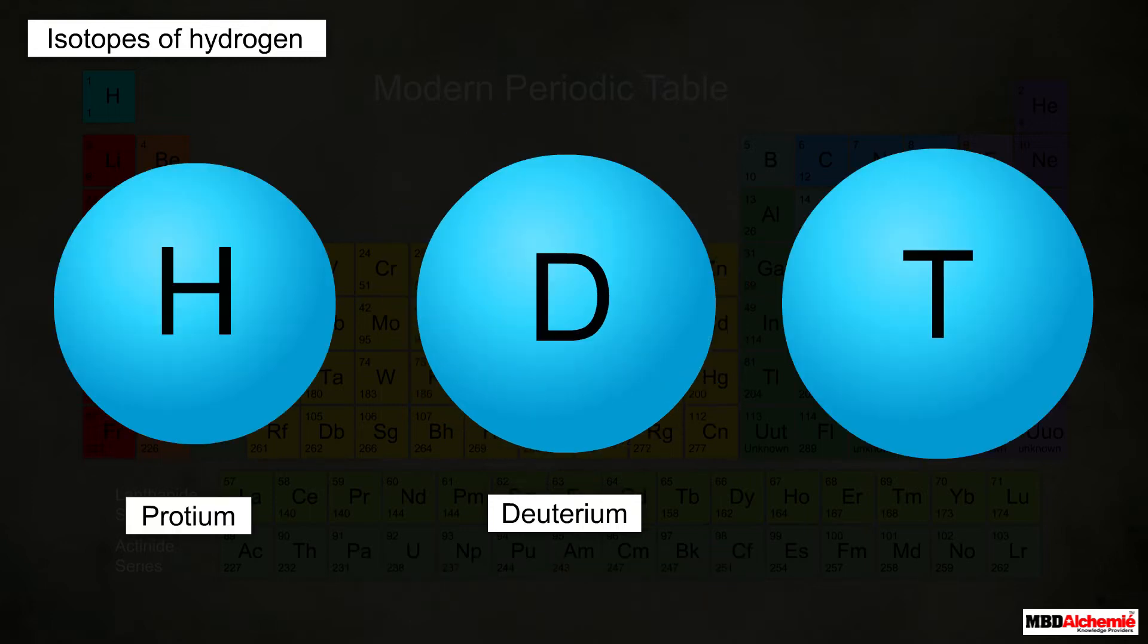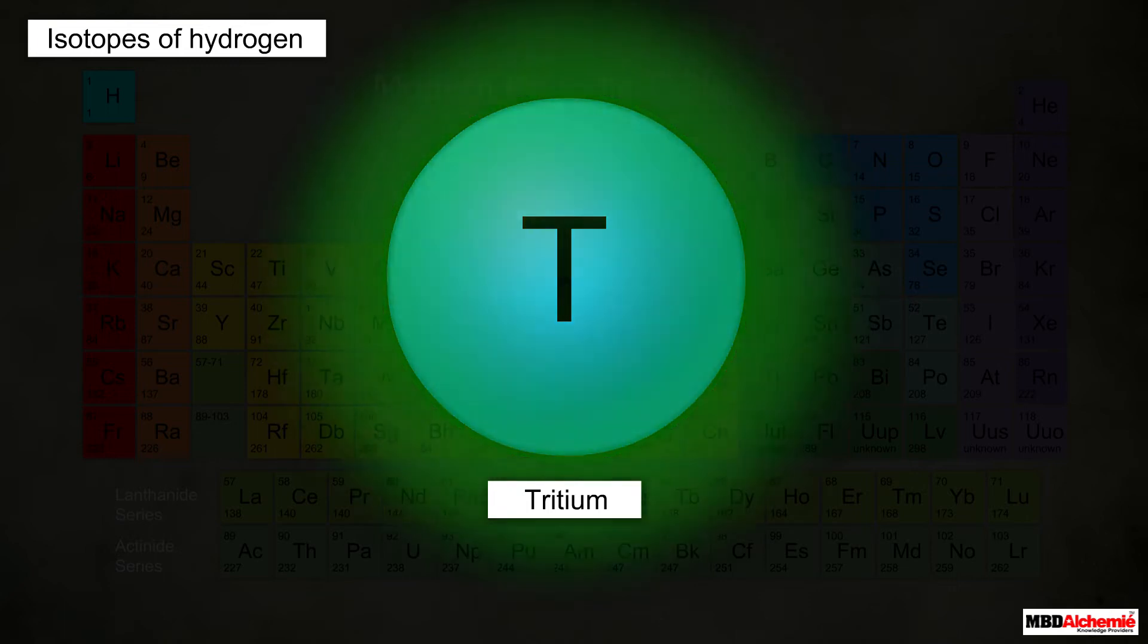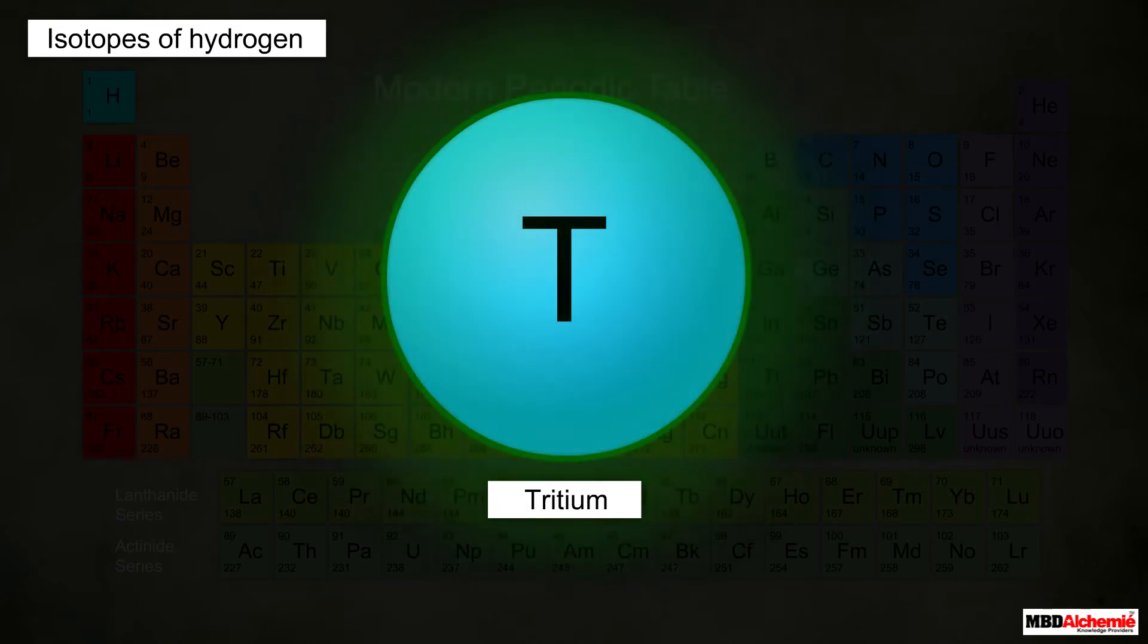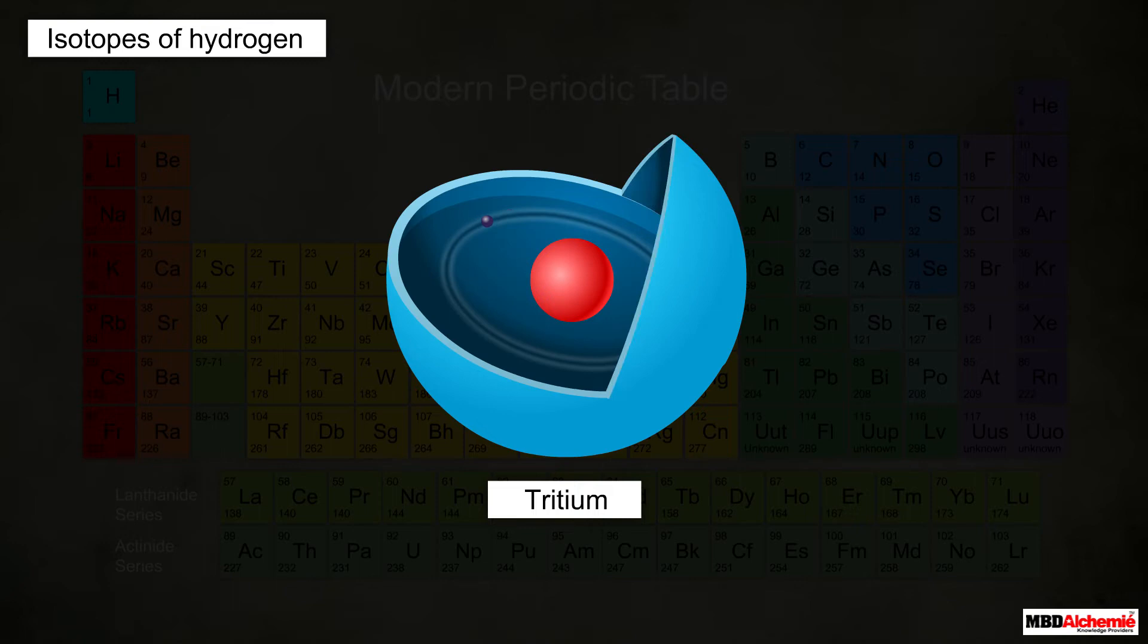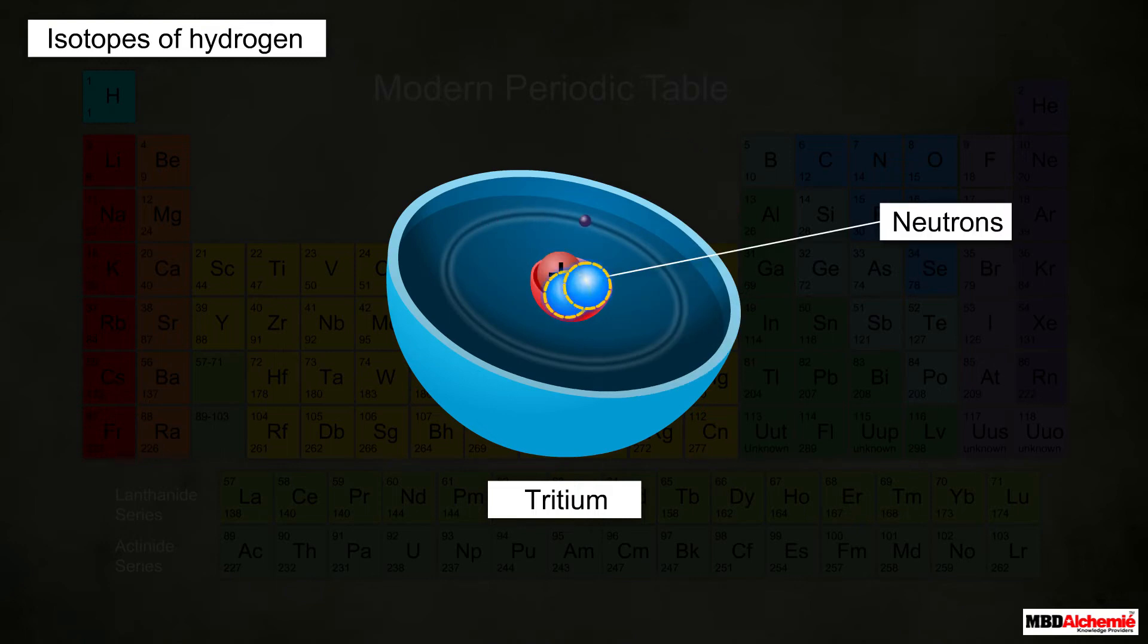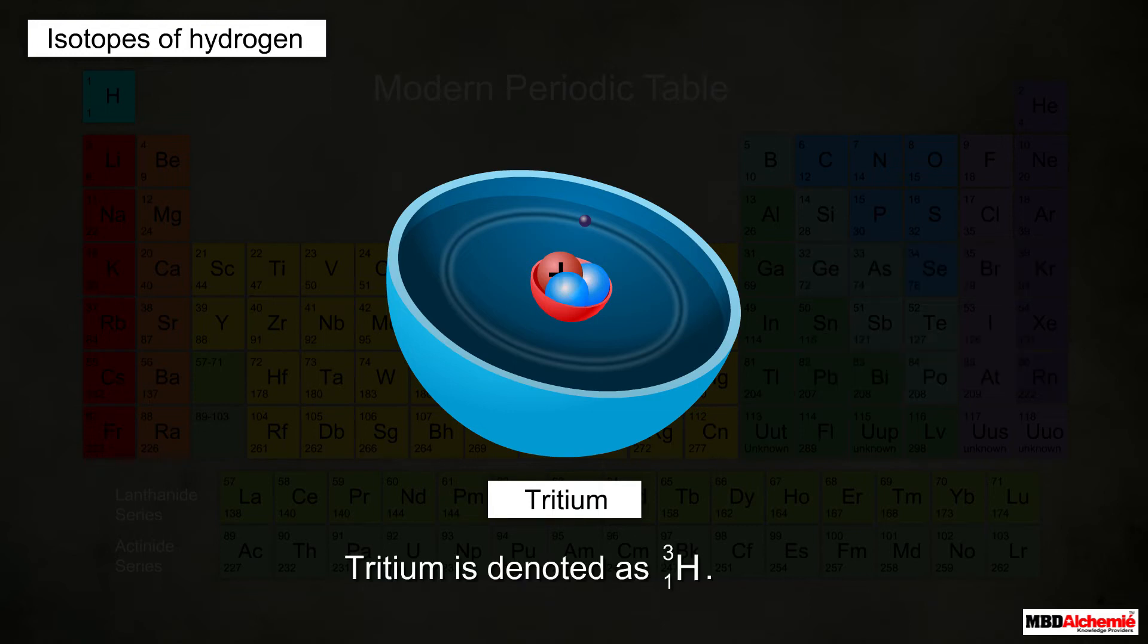Tritium is the third isotope of hydrogen. Out of the three isotopes, tritium is radioactive in nature and emits beta particles. Due to its unstable nature, it exists only in traces. It has two neutrons along with only one proton in the nucleus, so its mass number is three. As the atomic number is one, therefore tritium is denoted as 1H3.